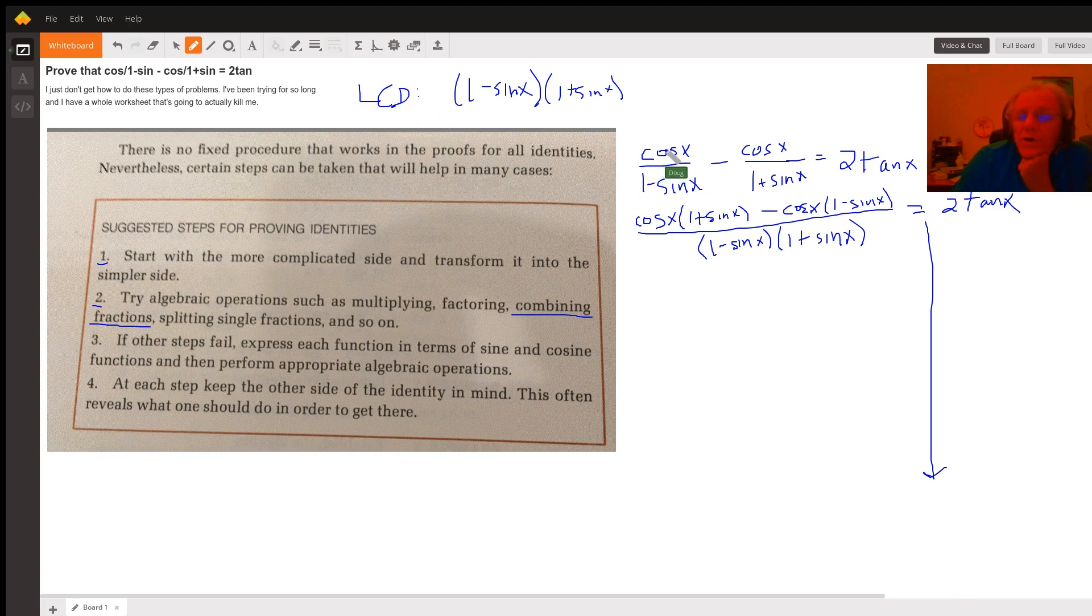So we multiply top and bottom of the first fraction by one plus the sine of X, because that's the missing factor. And on top and bottom of the second fraction by one minus the sine of X. So if we simplify this numerator, we get cosine of X plus cosine X sine X minus cosine X plus cosine X sine X.